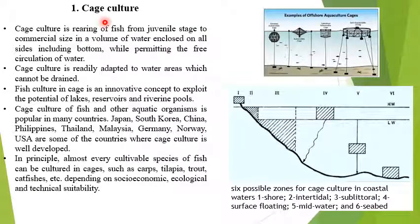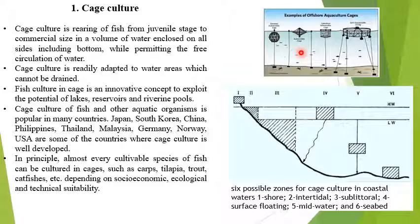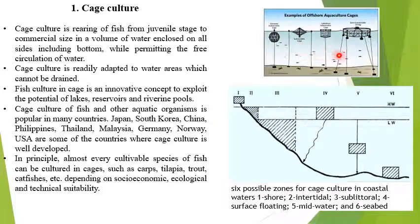What is cage culture? As the name indicates, culture of anything in cages is known as cage culture. You can see the various types of cages — varying in size, shape, and according to need, species, and habitat. The cage culture is the rearing of fish from juvenile stage to commercial size, enclosing the volume of water on all sides including the bottom, while permitting free circulation of water.